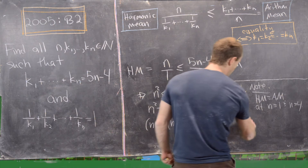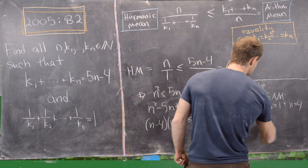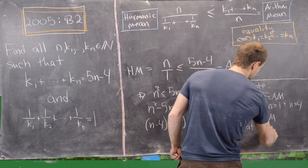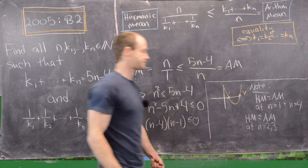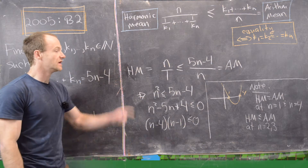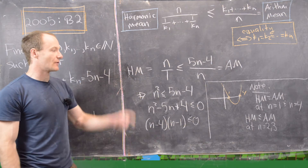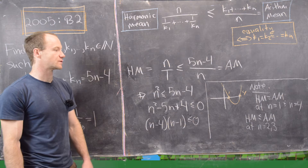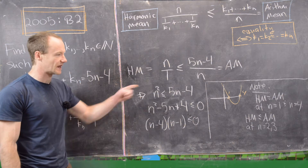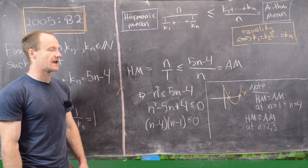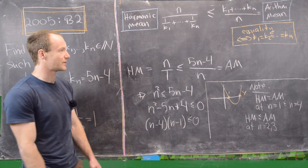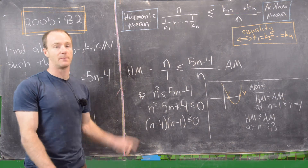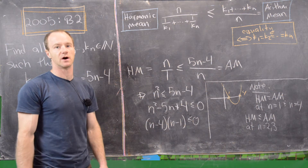The harmonic mean equals the arithmetic mean at n = 1 and n = 4, and the harmonic mean is strictly less than the arithmetic mean at n = 2 or 3. So we only need to look at four cases: n = 1, 2, 3, and 4. The n = 1 and n = 4 cases will be even simpler because we get the equality condition.